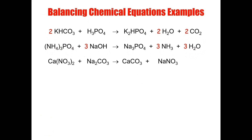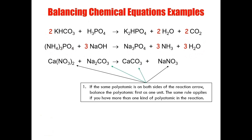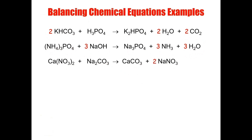That brings us to our next question. Our next question has quite a few polyatomic ions. We have two different types: a nitrate on both sides of the reaction arrow, and a carbonate on both sides of the reaction arrow. Rule number one states that if you have them on both sides, you can balance them as a single unit — the same rule applies if you have more than one type. I have one carbonate on both sides, but for nitrate I have two on the reactant side and only one on the product side. The quickest way to balance that is to add a two in front of that compound, and now I have two nitrate.